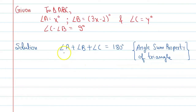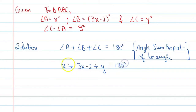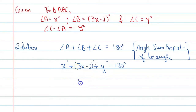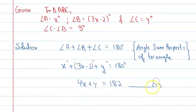We can say angle A plus angle B plus angle C is equal to 180 degree — reason: angle sum property of a triangle. So angle A is x, plus angle B is 3x minus 2, plus angle C equals 180 degree. Solving this, x plus 3x gives 4x, and 4x plus y equals 182. Mark it as equation number 1.